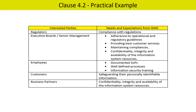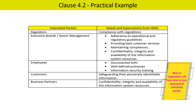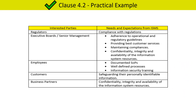Let us now discuss Clause 4.2 with a practical example. Generally for ISMS, interested parties and their requirements will be as follows. Most organizations will identify their interested parties as regulators, executive boards, senior management, employees, customers, and business partners. If an organization has done this, it indicates that it has complied with the requirement of Clause 4.2.